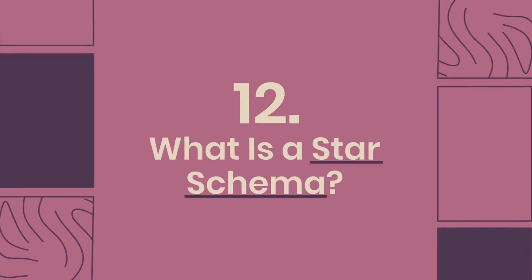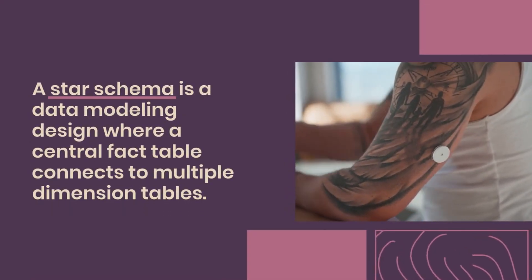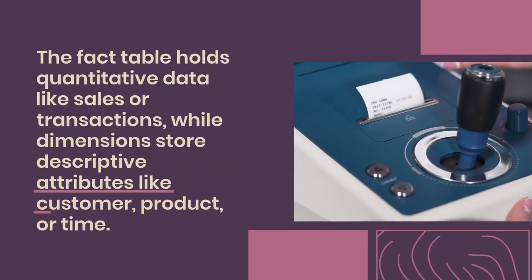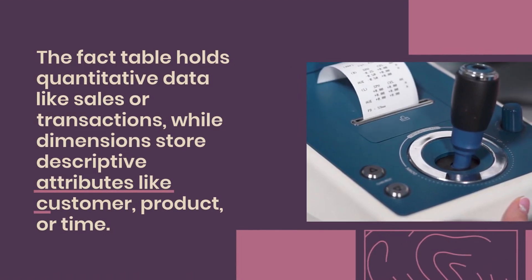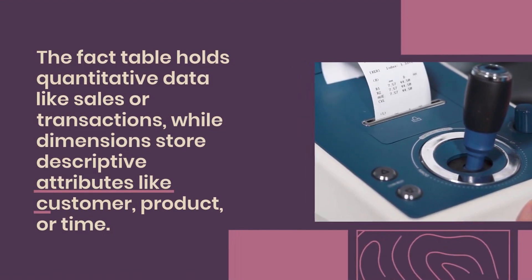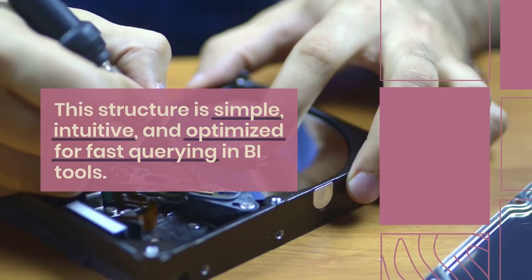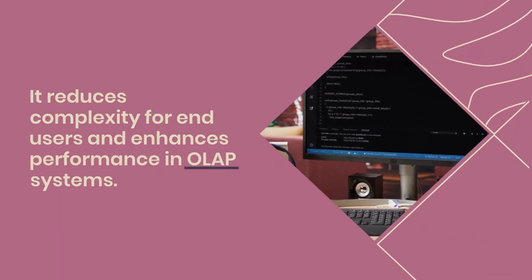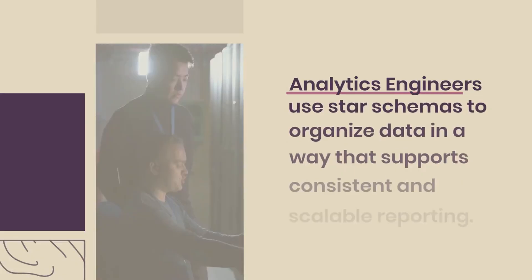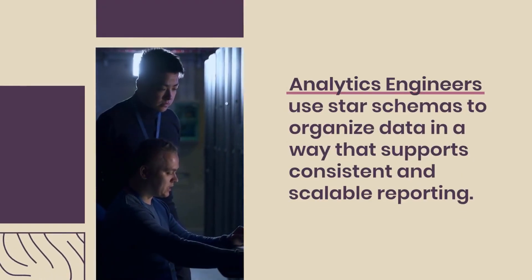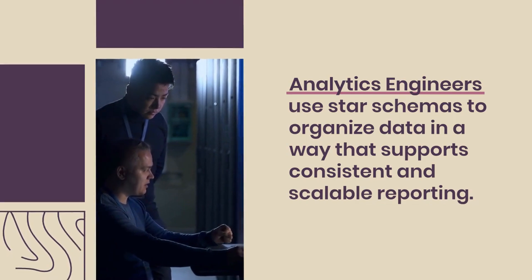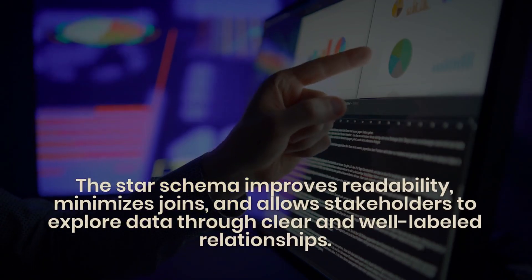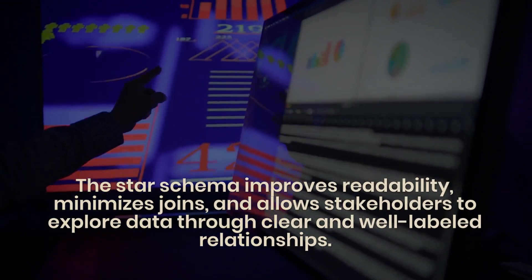Question 12: What is a star schema? A star schema is a data modeling design where a central fact table connects to multiple dimension tables. The fact table holds quantitative data like sales or transactions, while dimensions store descriptive attributes like customer, product, or time. This structure is simple, intuitive, and optimized for fast querying and BI tools. It reduces complexity for end users and enhances performance in OLAP systems. Analytics engineers use star schemas to organize data in a way that supports consistent and scalable reporting. The star schema improves readability, minimizes joins, and allows stakeholders to explore data through clear and well-labeled relationships.